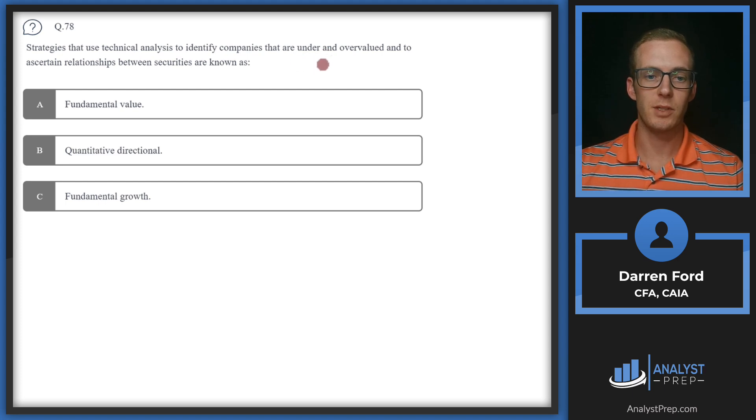Question 78: Strategies that use technical analysis to identify companies that are under and overvalued and to ascertain relationships between securities are known as... A: Fundamental value. Fundamental value is using under and overvalued - we're looking for companies that are undervalued that we'll probably go long in. Fundamental value is not really going to use technical analysis or be looking to ascertain relationships between different types of securities. We can cross off A.